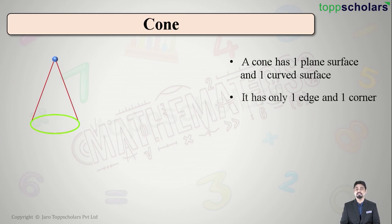So it has only one edge. Which is that single edge? It is that curved edge at the bottom, the circular edge. And if you see there is only and only one corner, that is at the top of the cone. Right? Now this corner of the cone is called the vertex of the cone. Remember this students? It is not called only as the corner. It is called as vertex of the cone. Great.